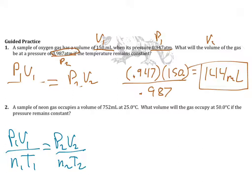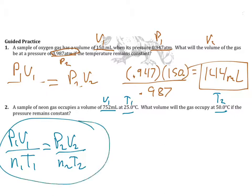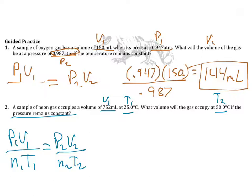On to the next problem. A sample of gas has a certain volume — this is V1 — and a temperature T1. The question asks what volume the gas will occupy if the temperature becomes 50 degrees Celsius, which is T2. Pressure is remaining constant, so we cross out pressure. Moles aren't given either, so we cross those out too.